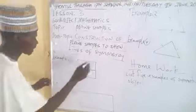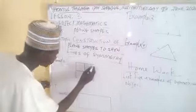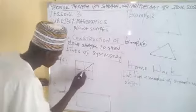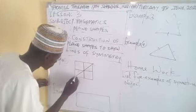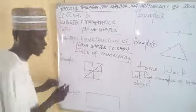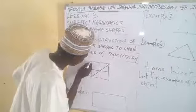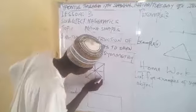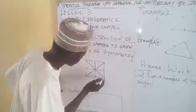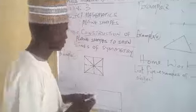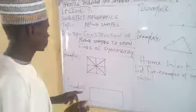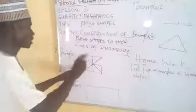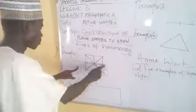Another line can come from this diagonal — it is also a line of symmetry. Another one from here, moving towards the other diagonal, is also a line of symmetry. That is one of the properties of a square.